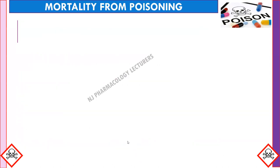Next is mortality from poisoning, that is the death rate from poisoning. These rates vary from country to country depending on the kinds of poison encountered, the extent of awareness about poisoning, the availability of treatment facilities, and the presence or absence of qualified personnel. Children under 15 years of age account for most cases of accidental poisoning but are associated with low mortality, whereas individuals over 15 years of age mostly show suicidal exposure and are associated with high mortality.